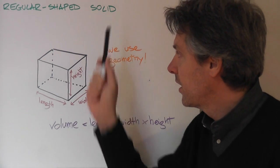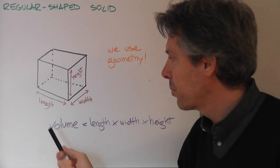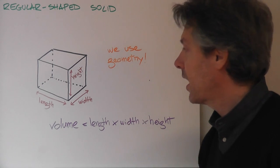So, in the case of a regular shaped object, we're going to use geometry. In the case of a rectangular prism, the volume will be given by length times width times height.